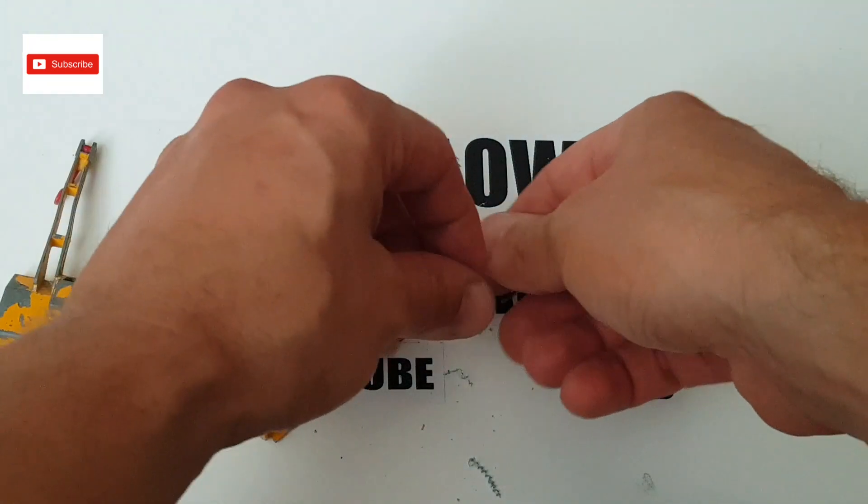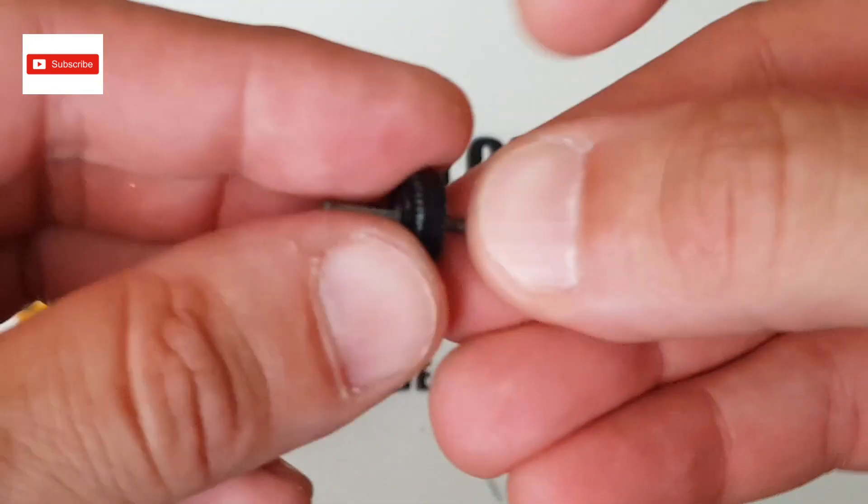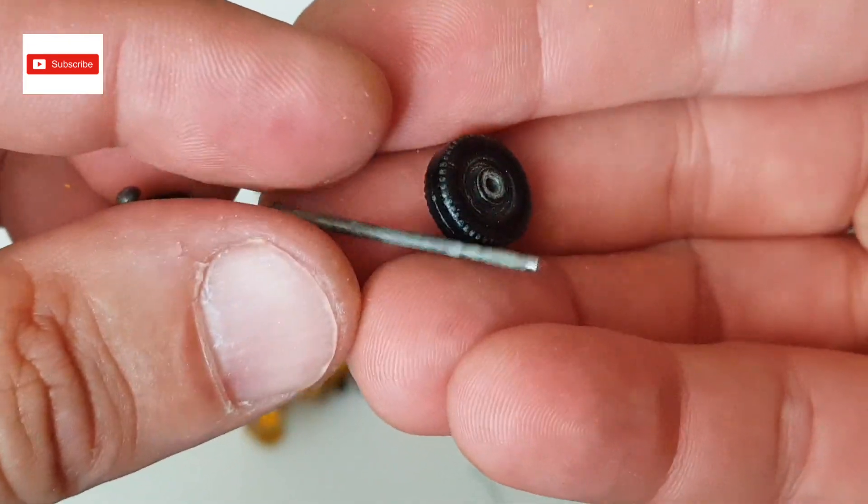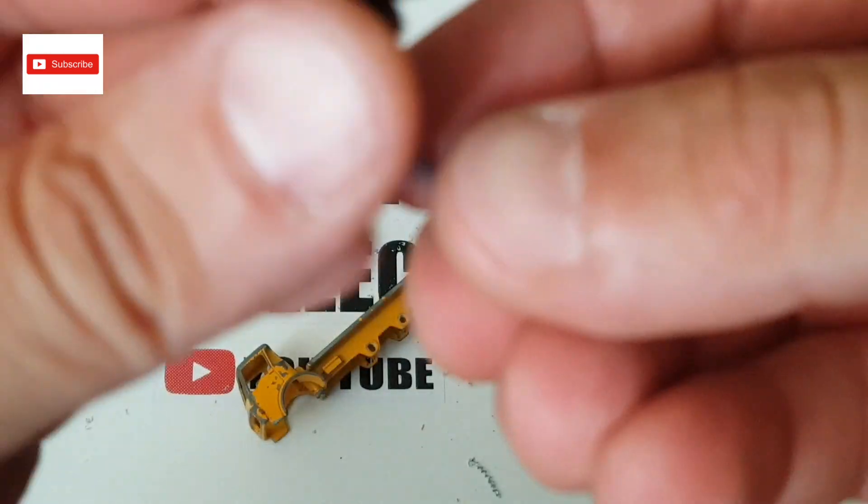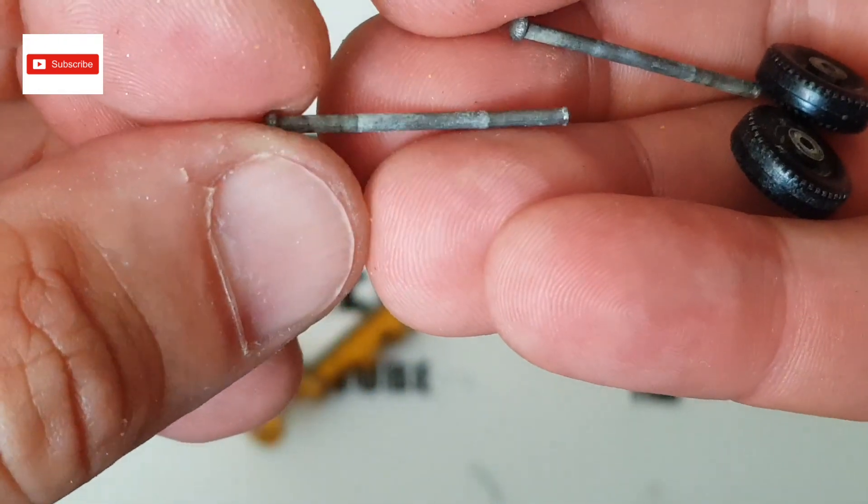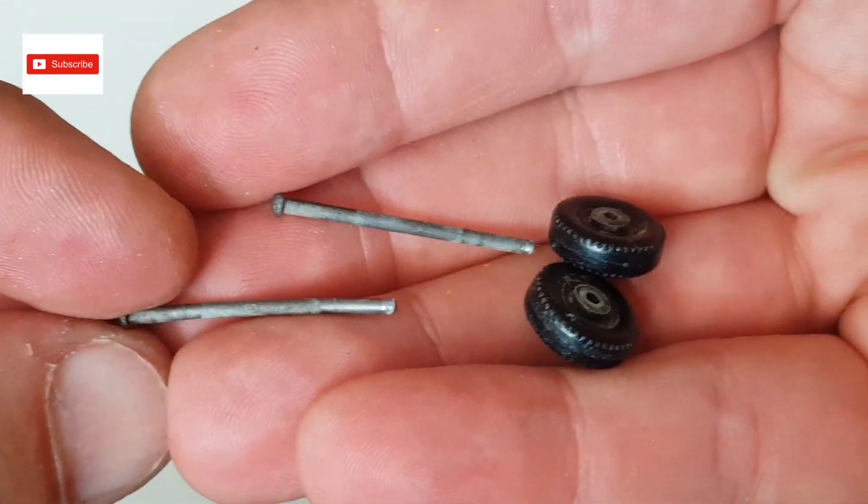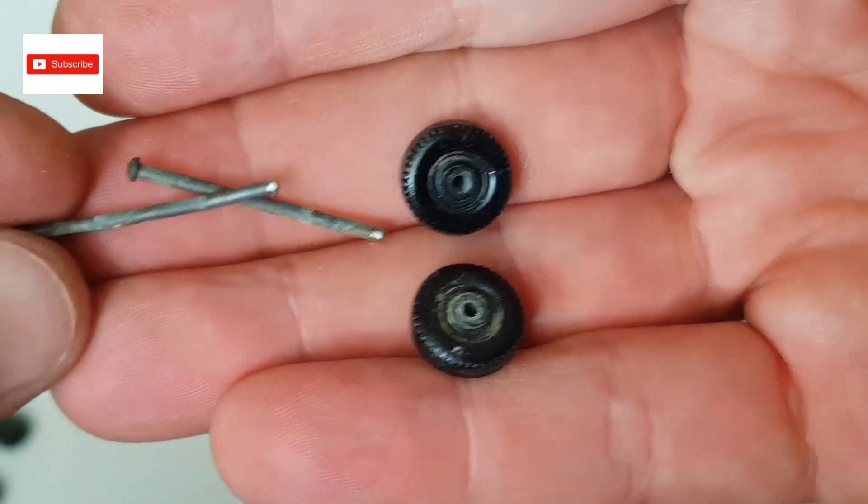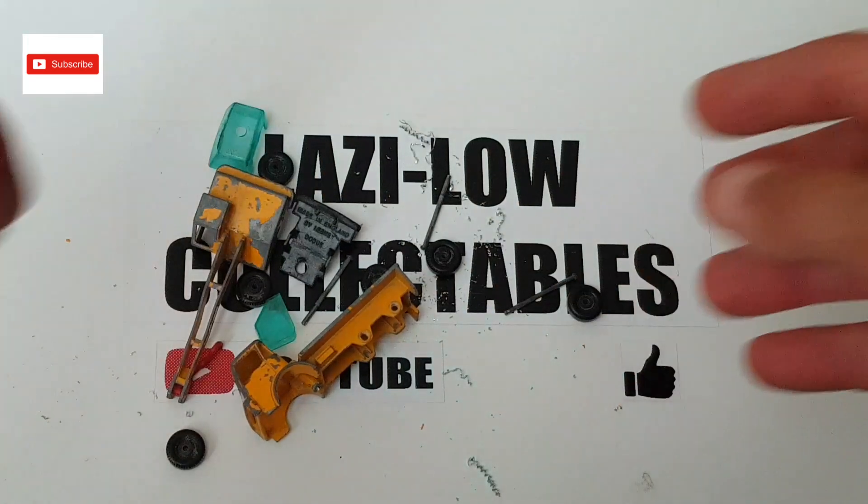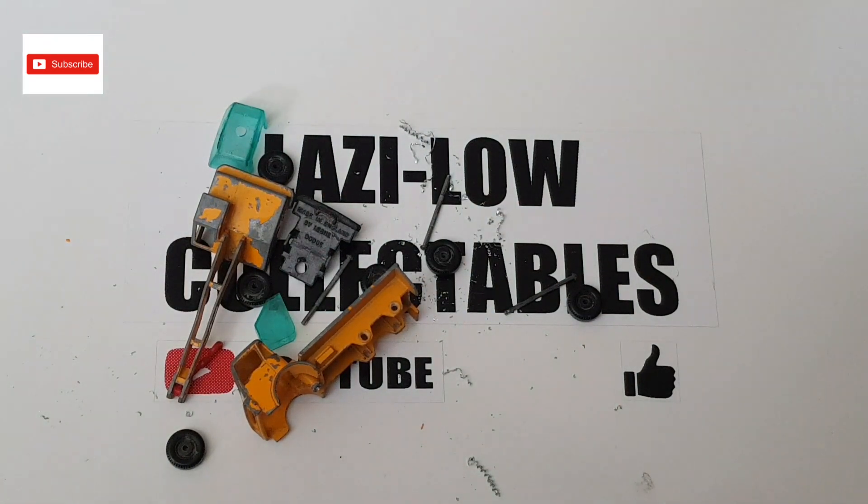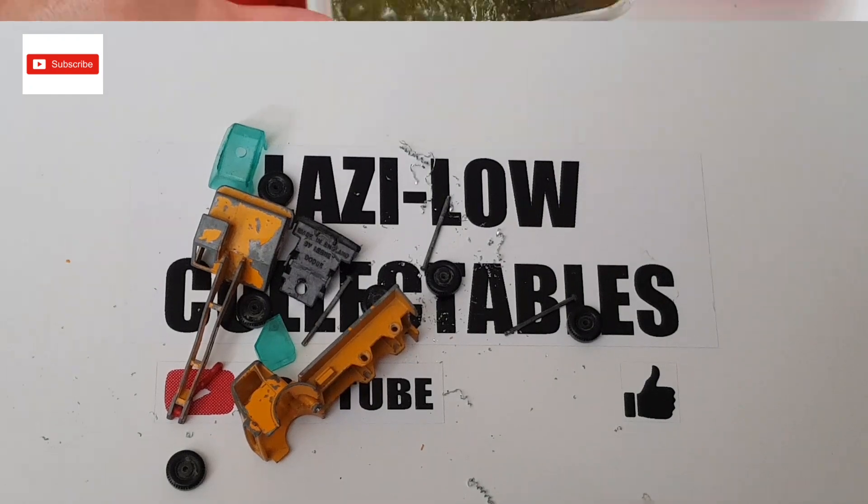The axles are pretty good actually, they're not banded or anything like that. This one a little bit, but apart from that it's pretty good. So I have to amend that one, but apart from that they're pretty good. So let's give a good wash and a paint strip for the body.